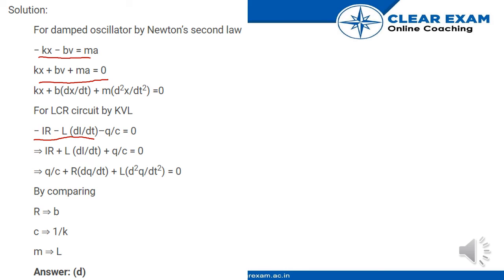Q/C + R(dq/dt) + L(d²q/dt²) = 0. By comparing these equations, R = b, C = 1/k, and M = L. So option D is correct.